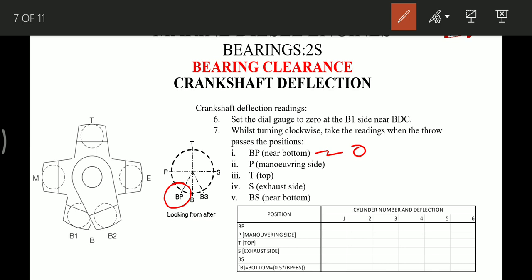And readings are taken when the crank throw passes through the positions - like at P, at T, at S, at BS. At B we cannot take reading directly, otherwise BP and BS these two positions are not required. But at B we cannot take reading directly, so we take reading BP and BS and then we average out the reading for B.